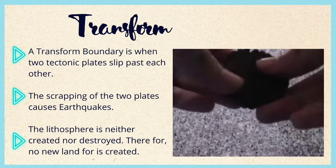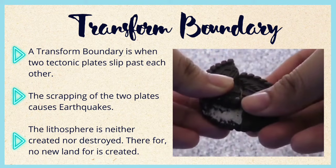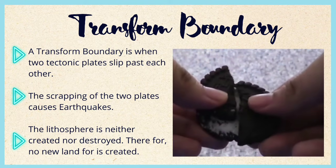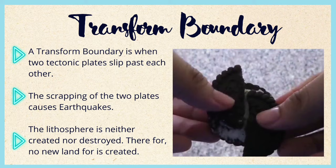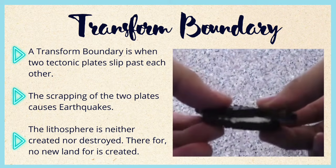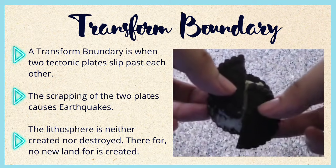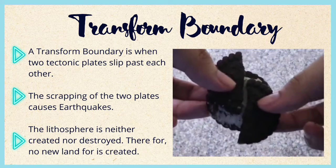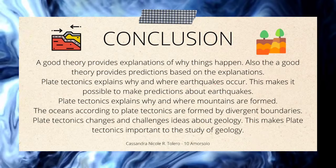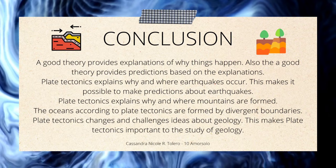A transform boundary is when two tectonic plates slip past each other. The scraping of the two plates causes earthquakes. The lithosphere is neither created nor destroyed, therefore no new land form is created.